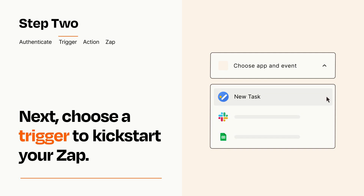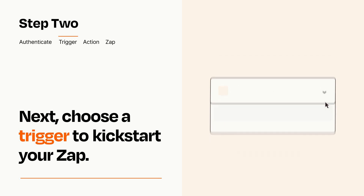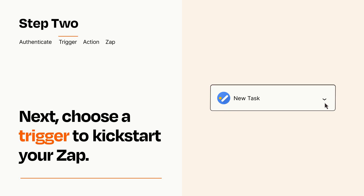When you set up this step, your Zap will pull in test data from your trigger app that you'll see later when setting up your action app.